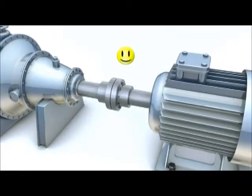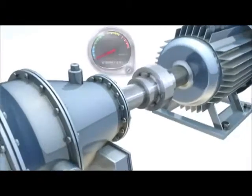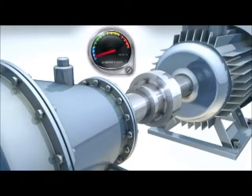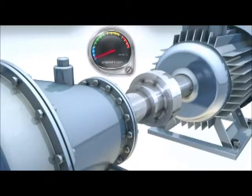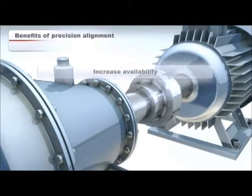The Rotaline Ultra also lets you enter custom user-defined tolerances as well as cold alignment targets and thermal growth values to compensate for machinery growth and ensure smooth, trouble-free operation. The benefits of precision alignment are increased machine availability, greater productivity, increased mean time between failures, greater energy efficiency, and lower operating costs.